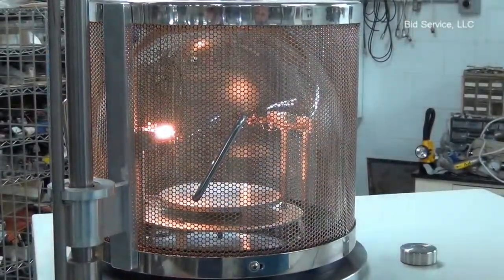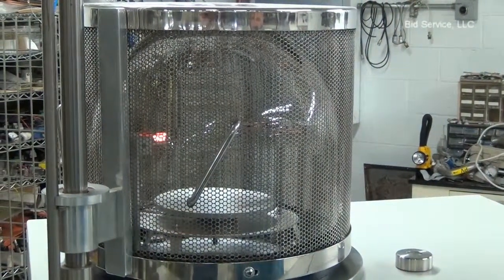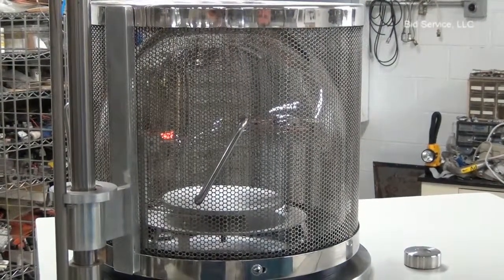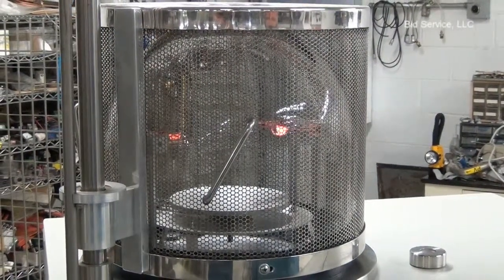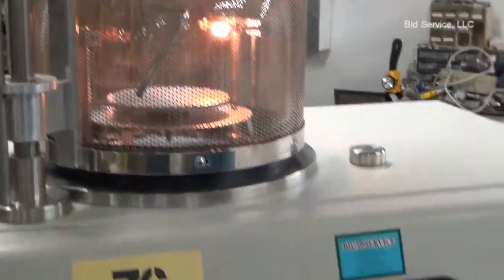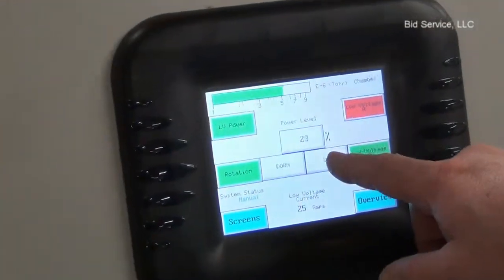Go over to B, turn that up to 20. Down in this column you can see that is showing the amperage, and I can ramp it up.